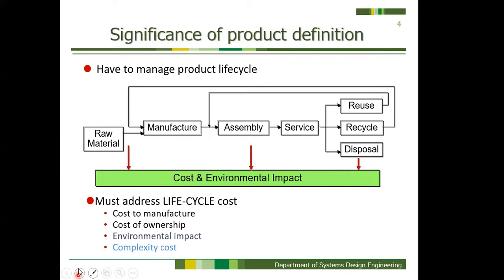Product definition is at the very beginning of the product development stage. In modern production, we have to manage the entire product life cycle — starting from raw material preparation through manufacturing, assembly, service, and maintenance, all the way to end-of-life treatment such as reuse, recycling, or disposal. All of those stages should be overviewed from the very beginning of product development.